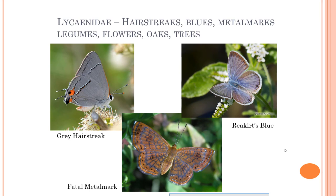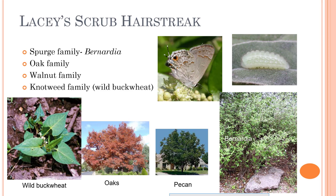The Lycaenidae family is made up of all the hairstreaks, metalmarks, and blues — really dainty, pretty little tiny butterflies. If you look at that gray hairstreak, they have a really neat look, with patterns on the antenna and tips being really orange. They're so small that you don't often appreciate the pretty coloring they have, and they are very, very blue — which is not really a common color in butterflies. They prefer to feed on things like legumes, flowers, oaks, and other trees. They have really cute little caterpillars — very short and stubby. Lacy's scrub hairstreak is one example — it's not really a drop like a swallowtail has, just a little hair that kind of flips up. They like things in the spurge family, Bernardia, oak family, walnut family, and knotweed family — wild buckwheat, oaks, and pecans, things well established throughout the San Antonio and Texas landscapes.